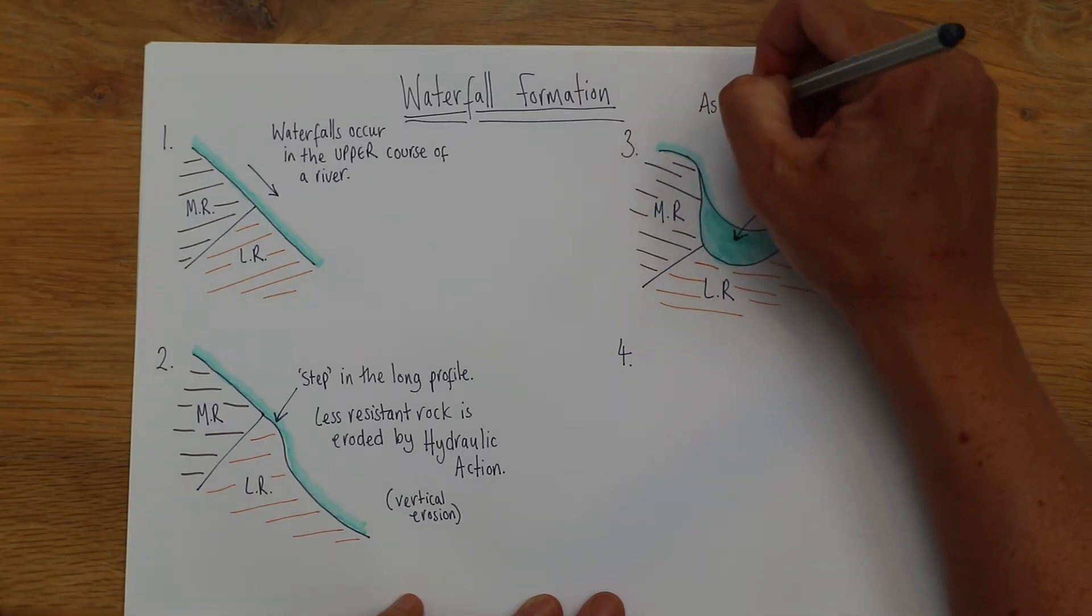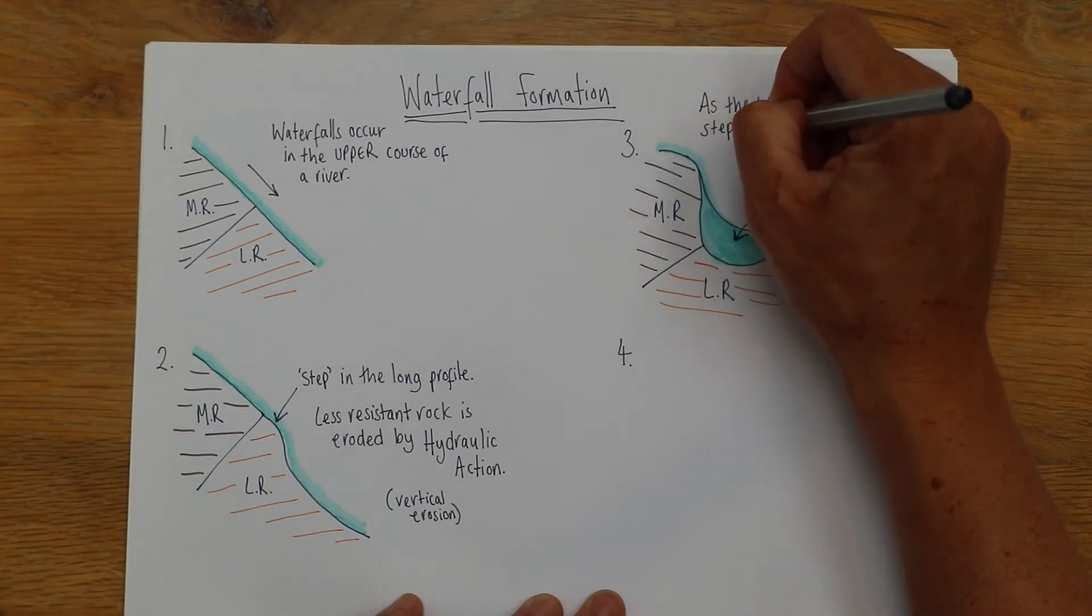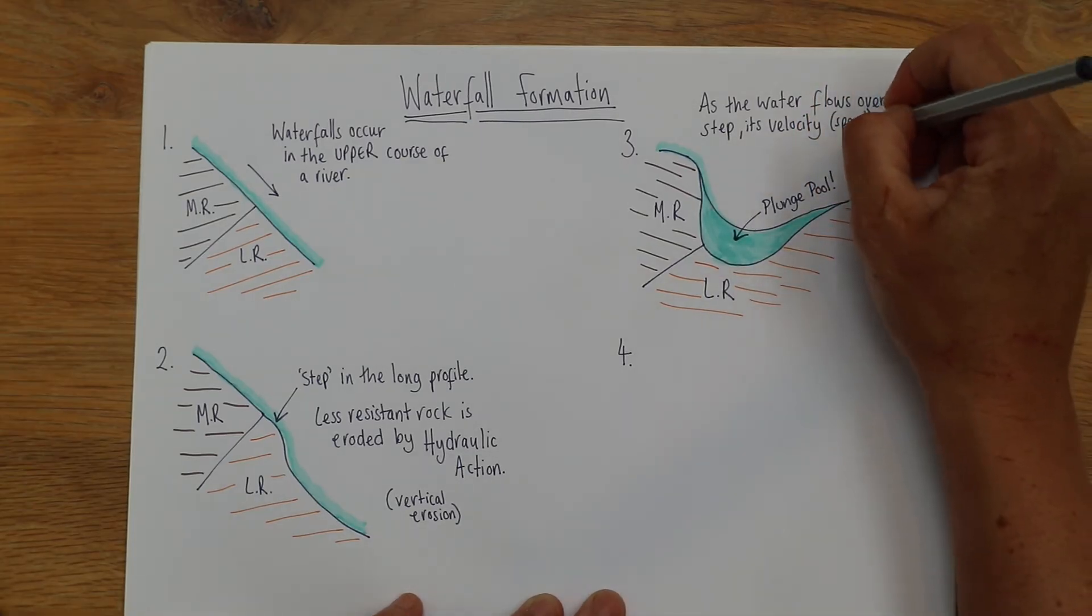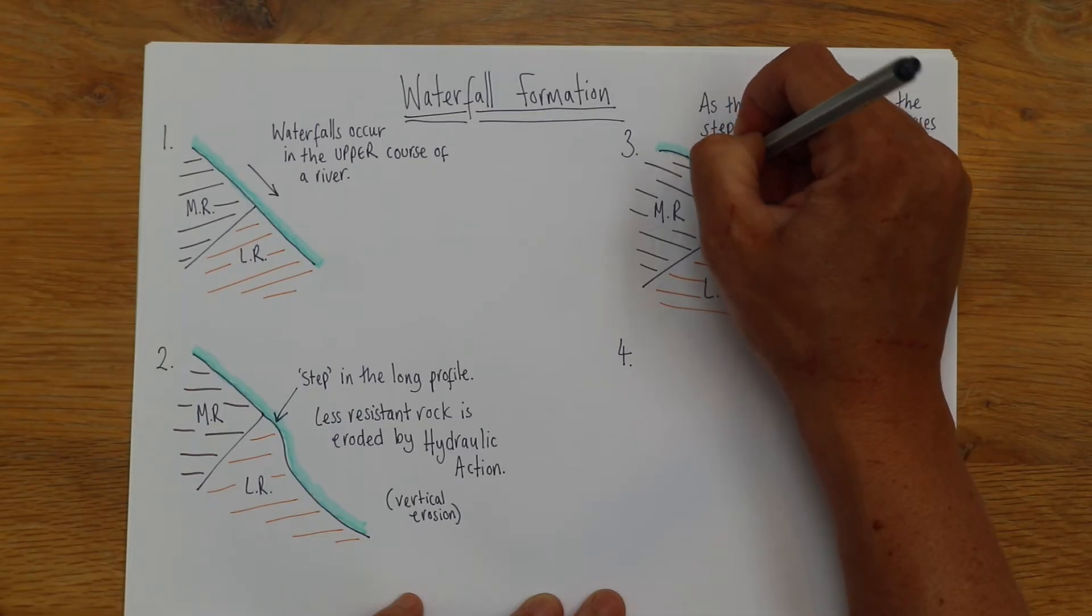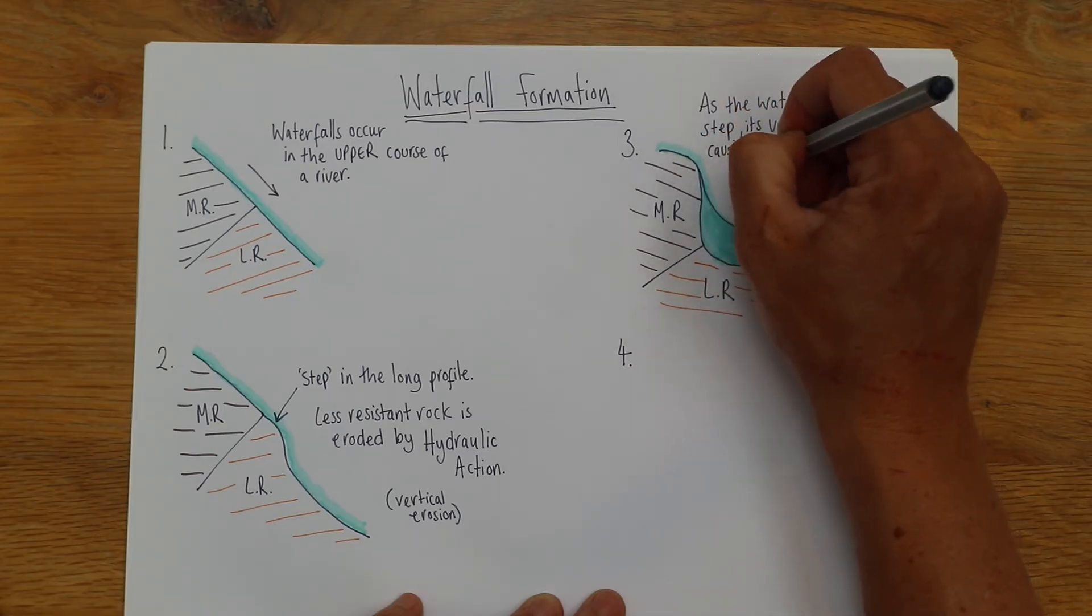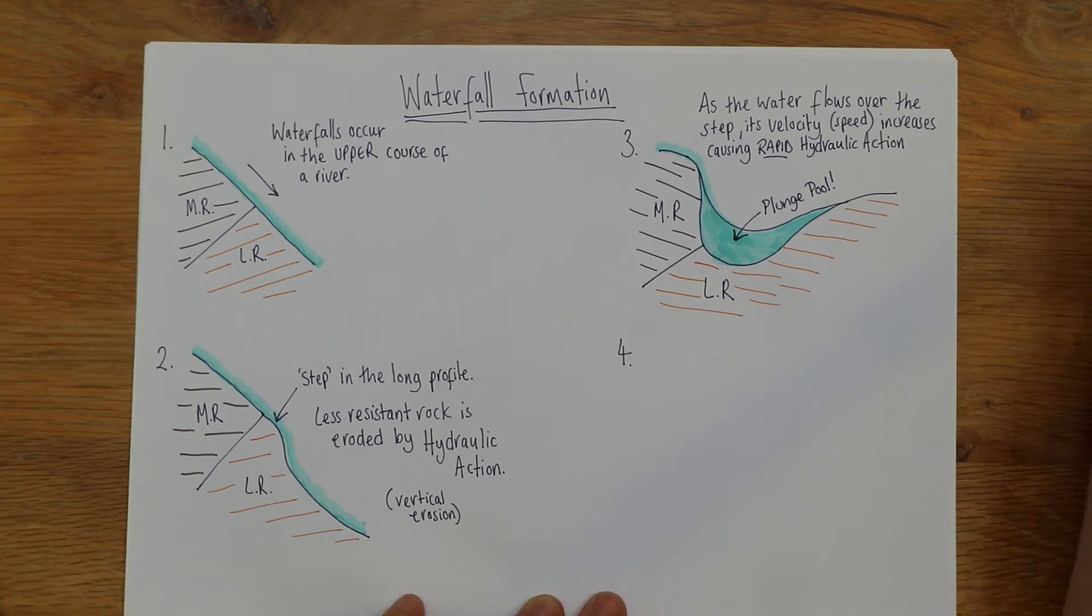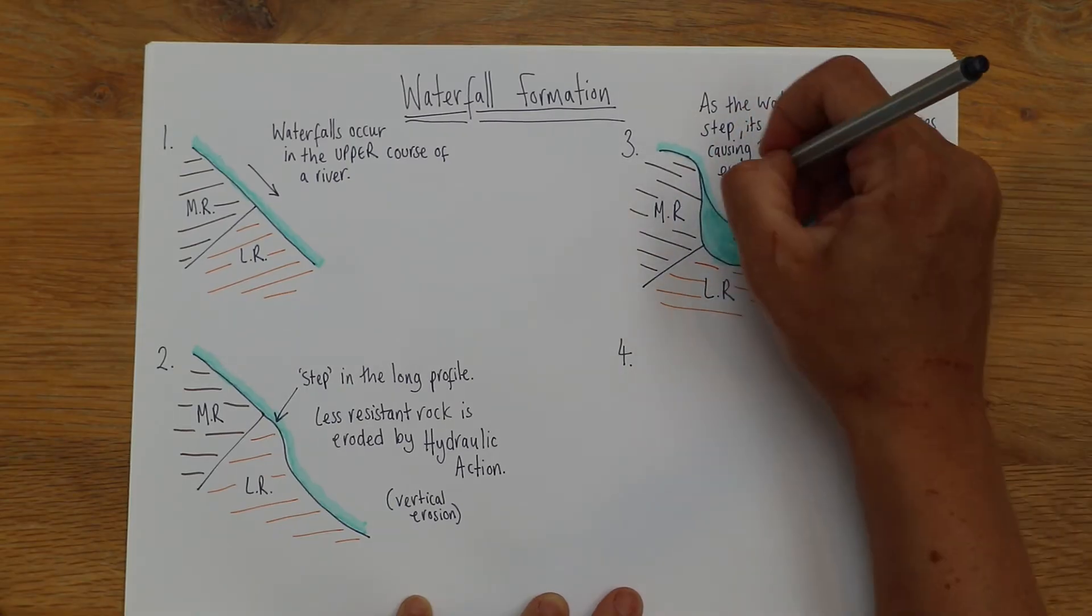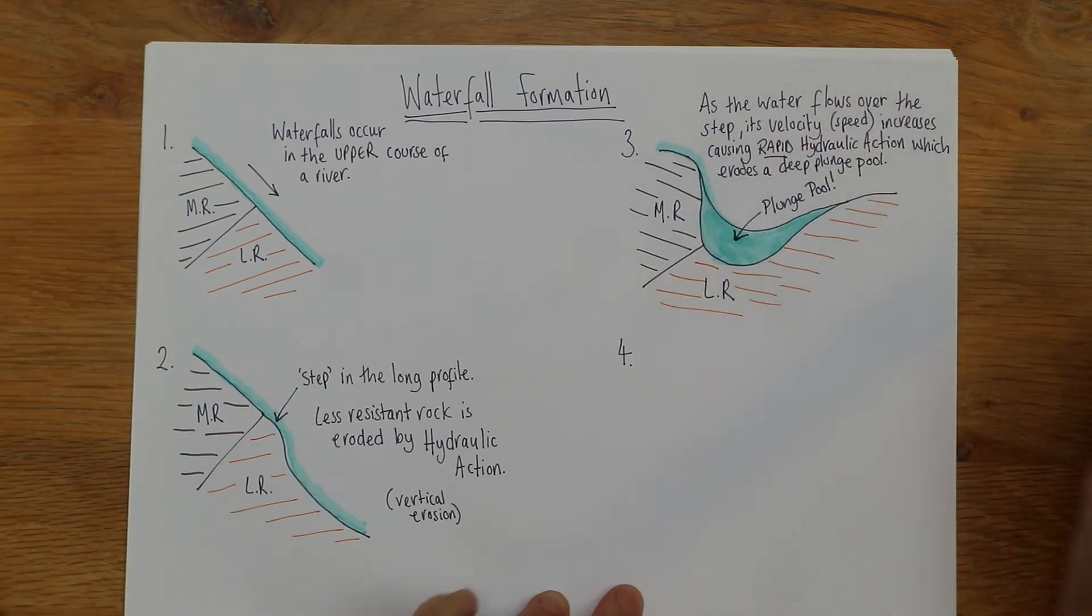So as the water flows over the step, its velocity (that word in brackets means speed) increases, so it goes faster, causing rapid hydraulic action which erodes a deep plunge pool.